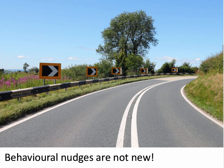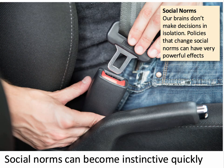Behavioral nudges are not new. We've had white lines in the middle of the road for decades to nudge people to use the right or left hand side of the road depending on which country you're driving in. Another really important point is that increasingly we understand that people's behavior is not taken in isolation — our brains don't make decisions independently. We often operate within the context of norms and networks, and policies that change social norms can have very powerful effects, oftentimes very quickly.